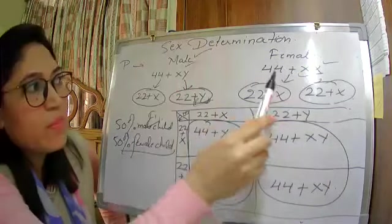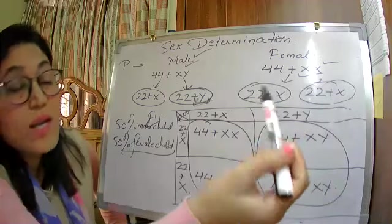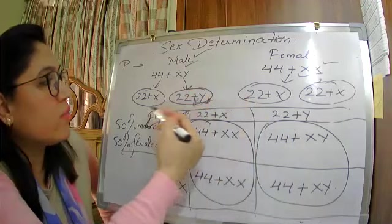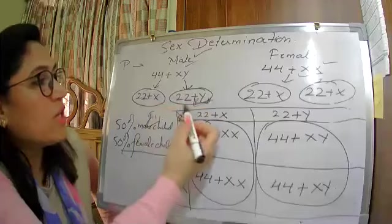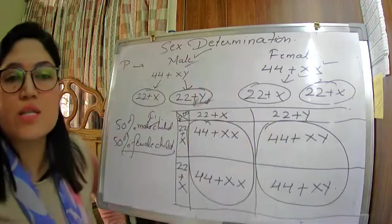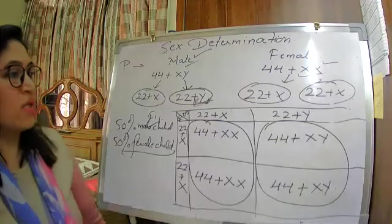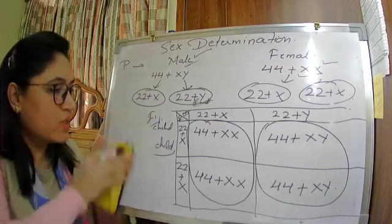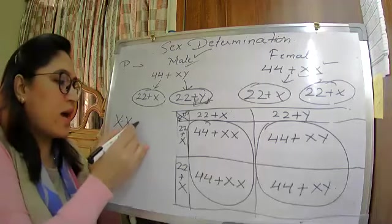Only the male is responsible if a couple is not having a male child. And it is not even in the hands of the male — it is by chance which gamete goes into the fertilization process. There are 50-50% chances of having a male or female child.